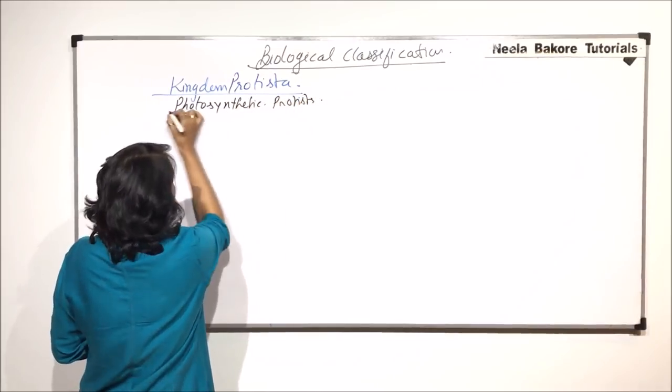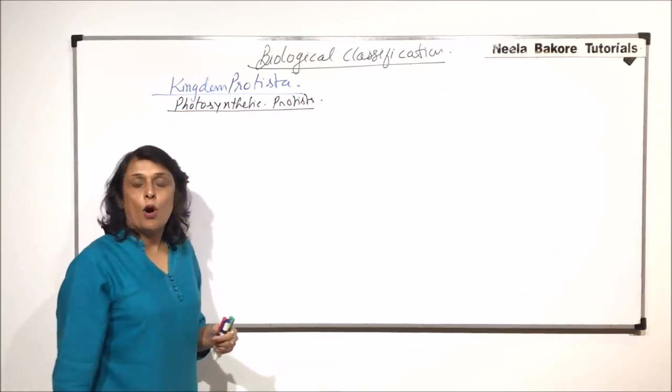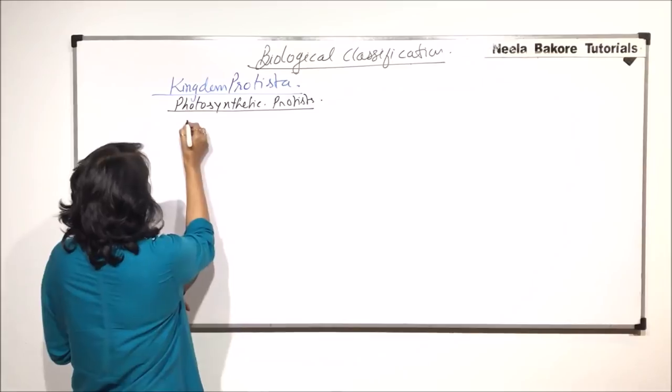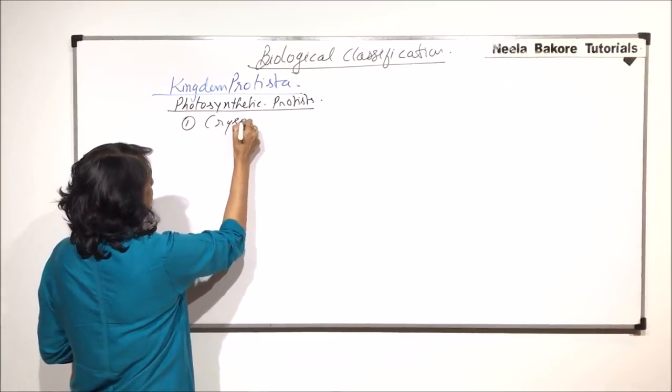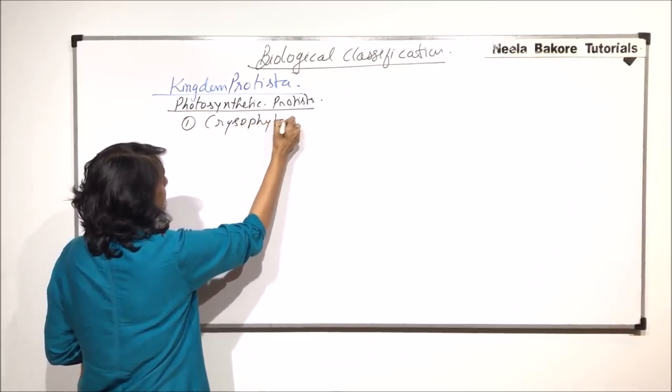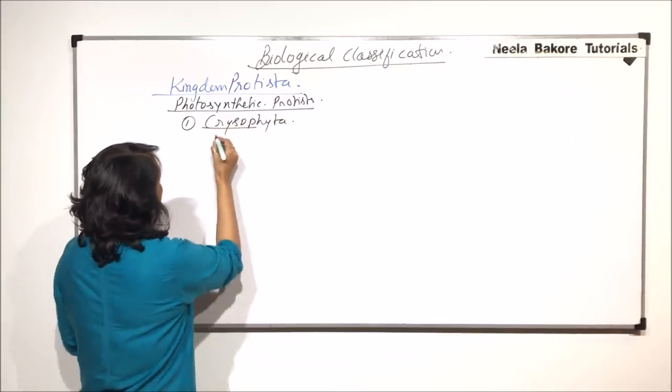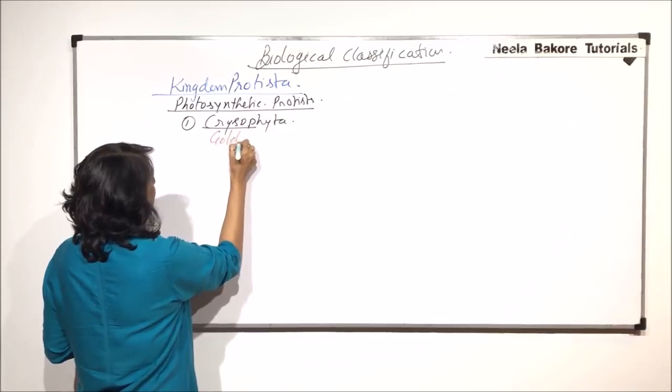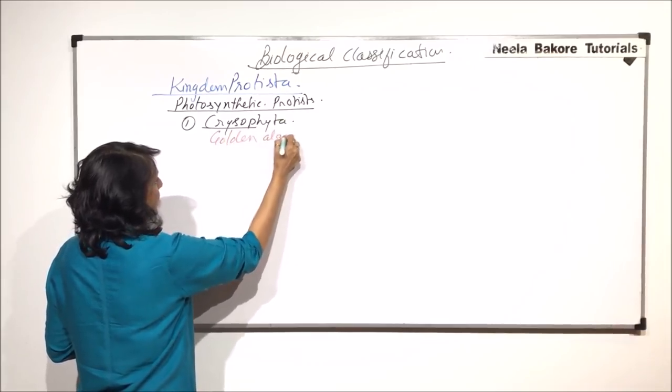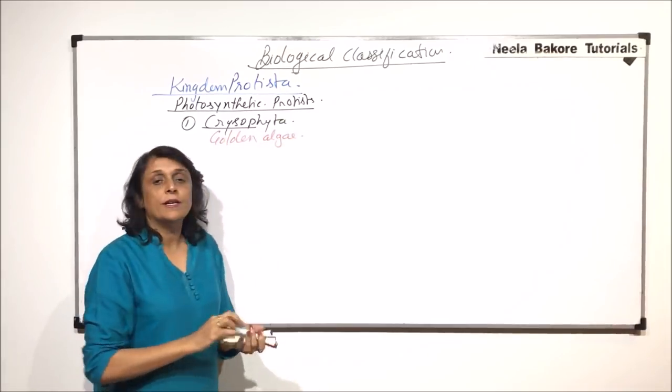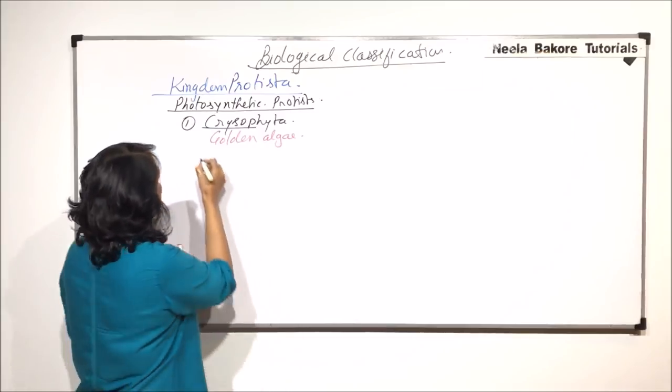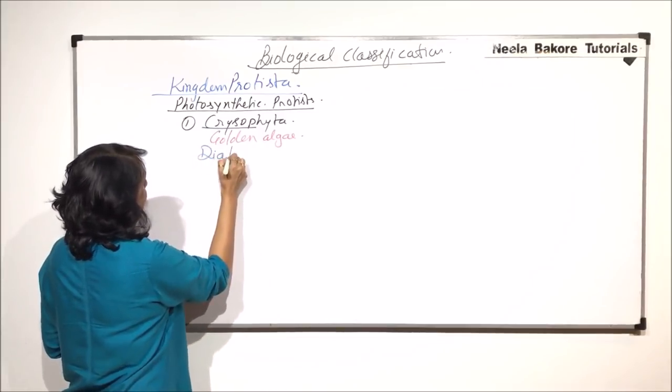In this group of Kingdom Protista, the first phylum is Chrysophyta, which is commonly known as Golden Algae. The most important example of this group is diatoms.